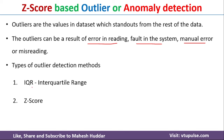There are mainly two methods for detecting outliers. The first one is the IQR-based method, and the second one is the Z-score-based method. In the previous video, I discussed how to use the IQR-based method. In this video, I will discuss how to use the Z-score-based method for detecting and removing outliers.